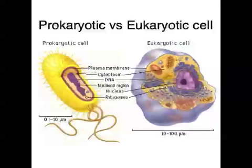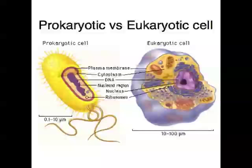There are two main types of cells. There are eukaryotic cells, which are more complicated than prokaryotic cells. Eukaryotic cells are contained within a plasma membrane, they have membrane-bound organelles, and they have a protein-based cytoskeleton which keeps the cell together. Prokaryotic cells are simpler structures, and importantly they lack membrane-bound organelles.